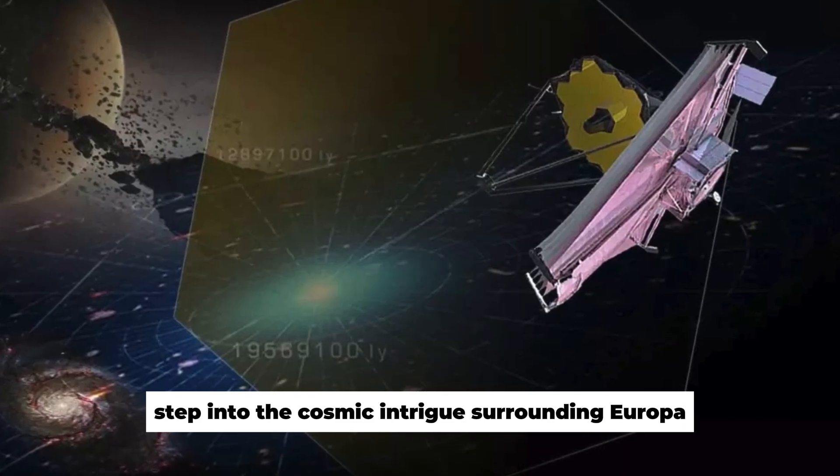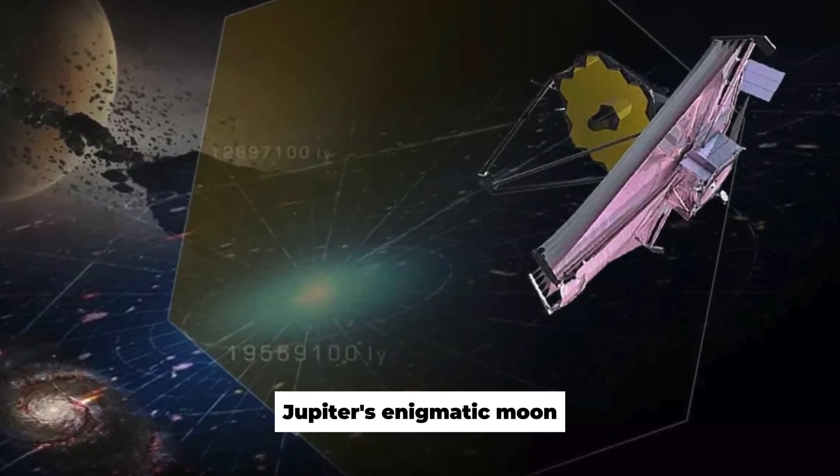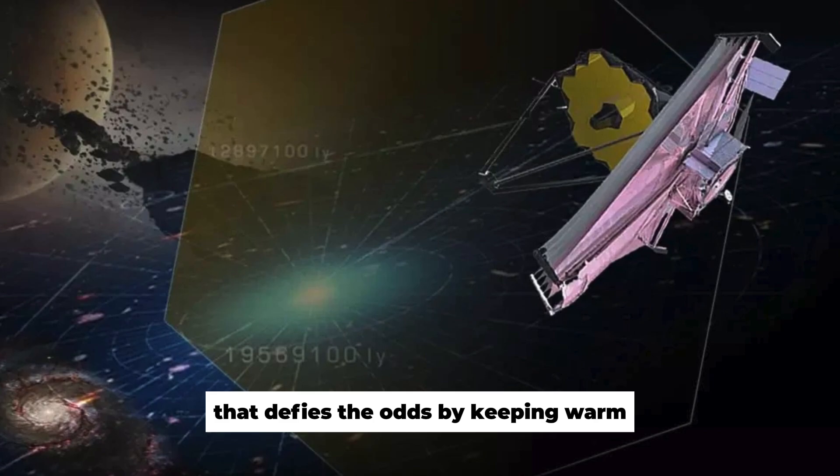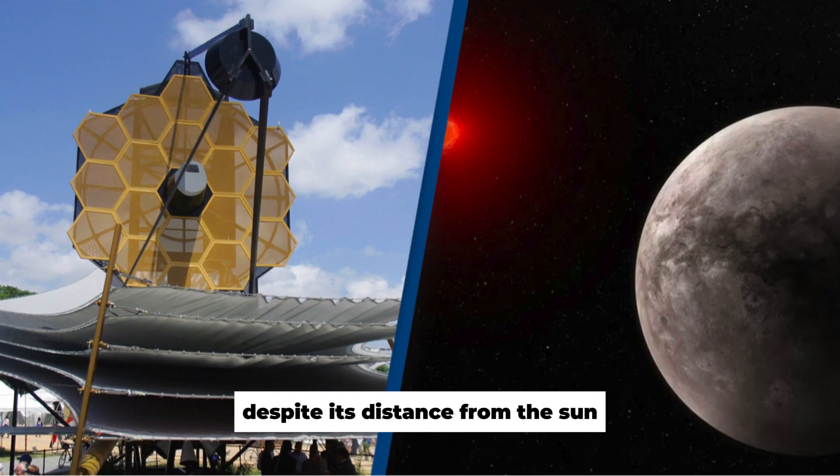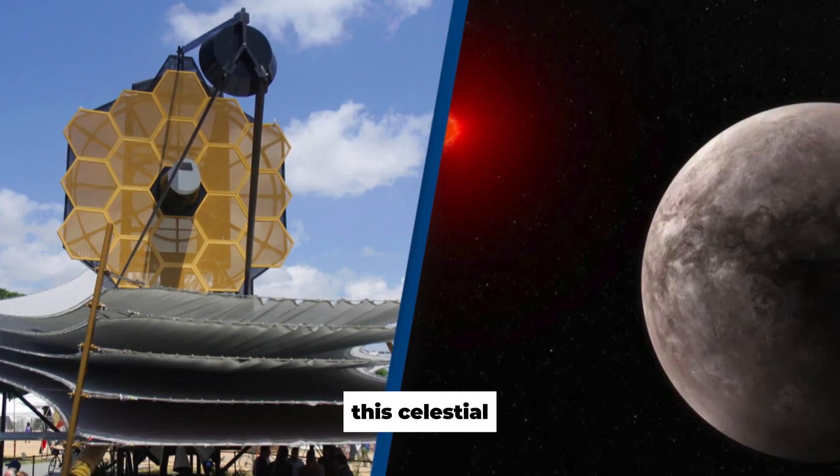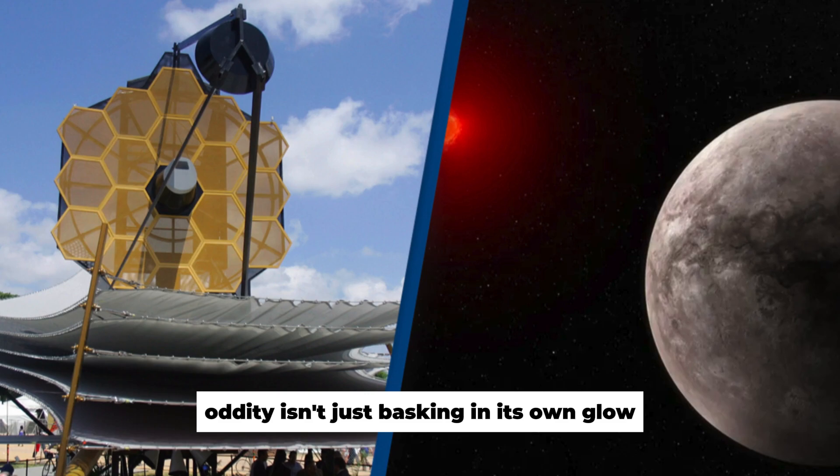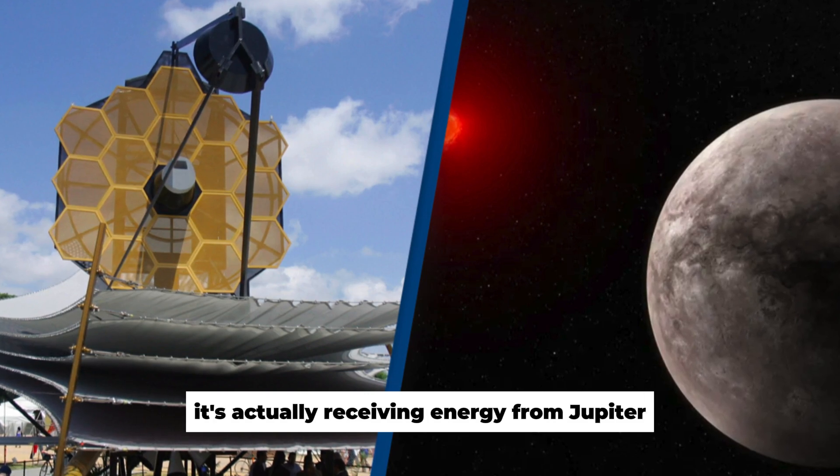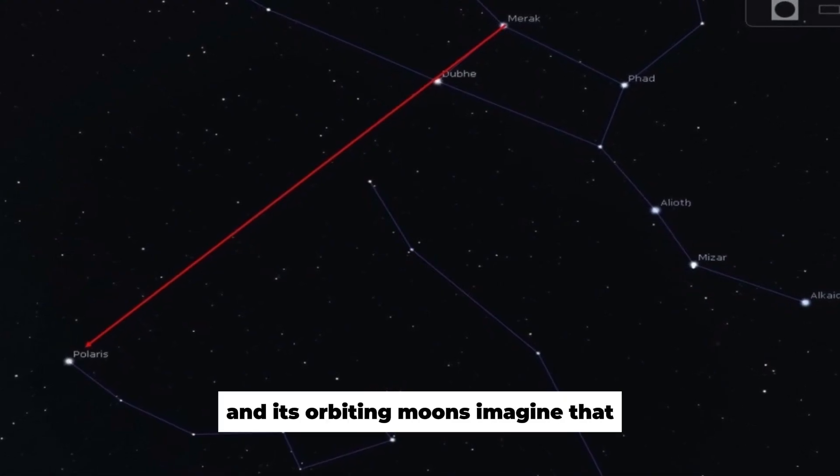Step into the cosmic intrigue surrounding Europa, Jupiter's enigmatic moon that defies the odds by keeping warm despite its distance from the Sun. This celestial oddity isn't just basking in its own glow, it's actually receiving energy from Jupiter and its orbiting moons.